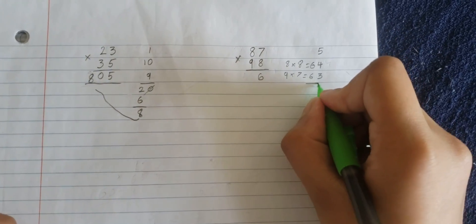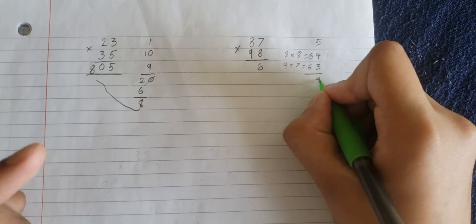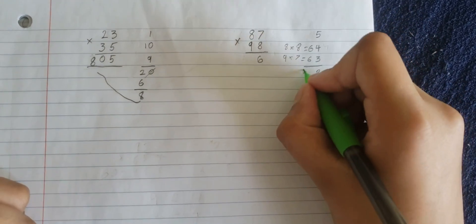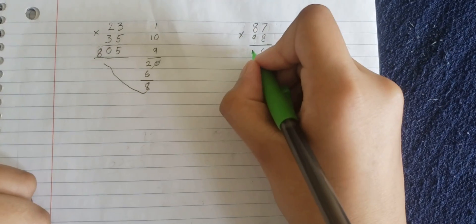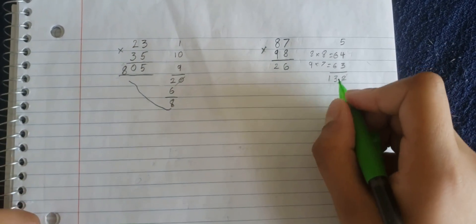Now, you add these, 12, 1, 3, 2. Now you cancel the 2 and put it here, 2, and the 13 remains.